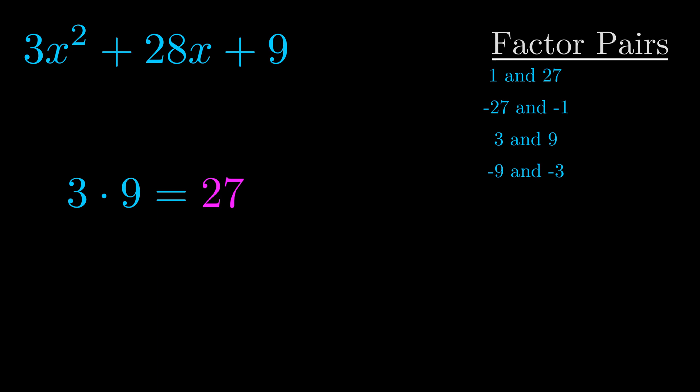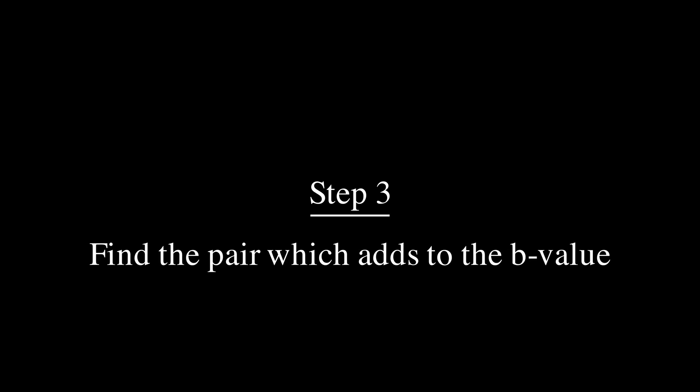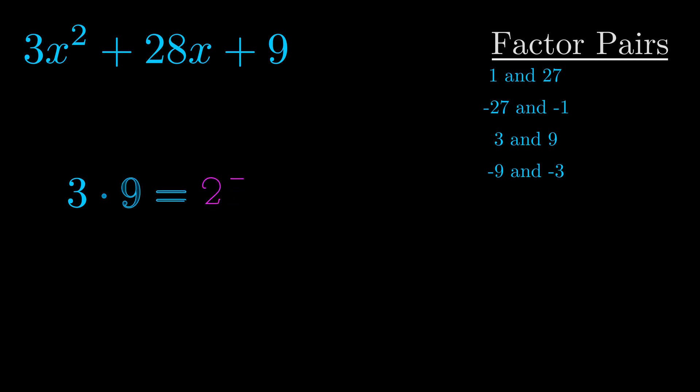Now once you have these factor pairs, the goal is to find which of these pairs adds to the b value. The b value is the coefficient on the x term. That's the middle term, the one that we haven't done anything with yet. And really this is the only factor pair that we need.